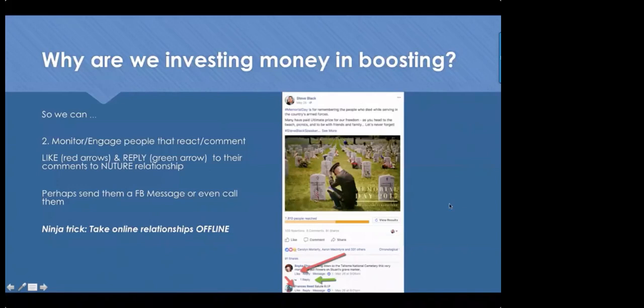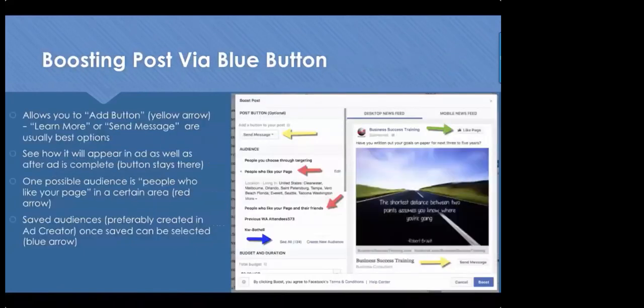The ninja trick with social media is to take your online relationships offline. Whether connected on Facebook, LinkedIn, or Instagram, if you have an opportunity, send them a Facebook message: 'Hey, I'm new to social media, I like to talk to people — open to a phone call?' Or mention a local event, like an Ignite group that meets twice a week in Tacoma. Look for opportunities to get face to face. I know a lot of you have people you're connected to on social media you haven't seen in more than a year or ever met.